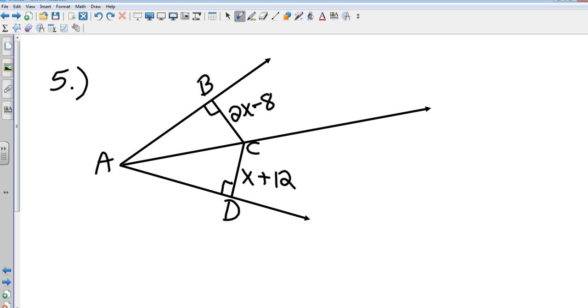Okay number five. What I'm going to tell you is that ray AC bisects angle BAD, the bad angle. What I want you to do is solve for x.